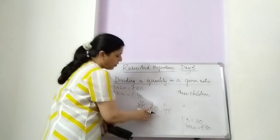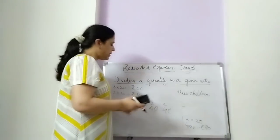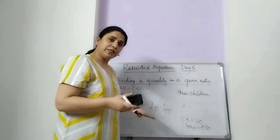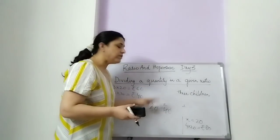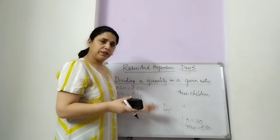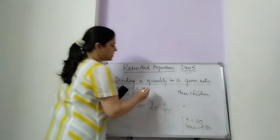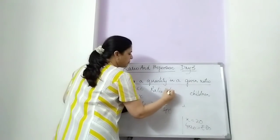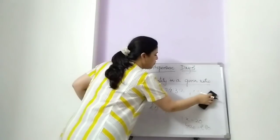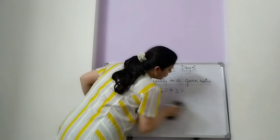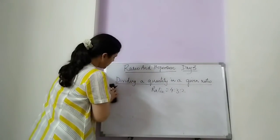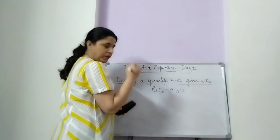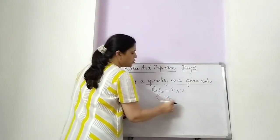So the same thing — in the first part, the quantity was given and we were dividing by a common number to find the ratio. Now the ratio is given and we are dividing a quantity in that ratio. Just the reverse process of it. The other way of doing this: the ratio was 4 is to 3 is to 2, and the quantity was 180. The second method — you can use any method, but you should know both, because in the next sum we should know the x method also.